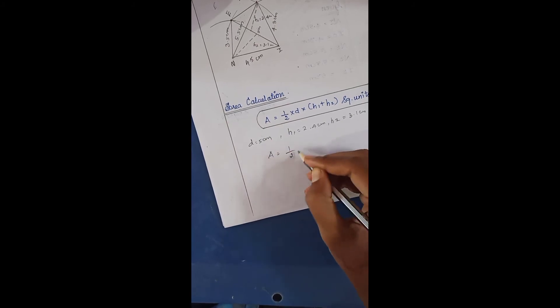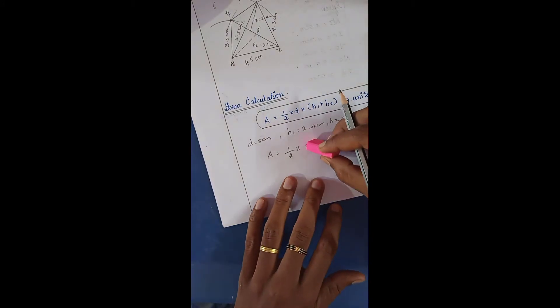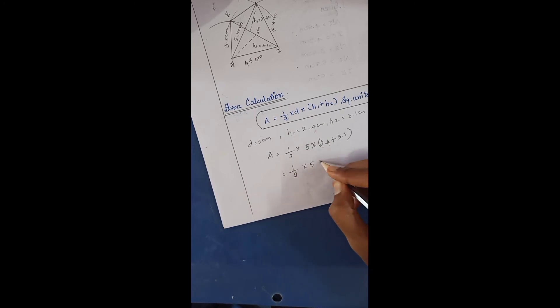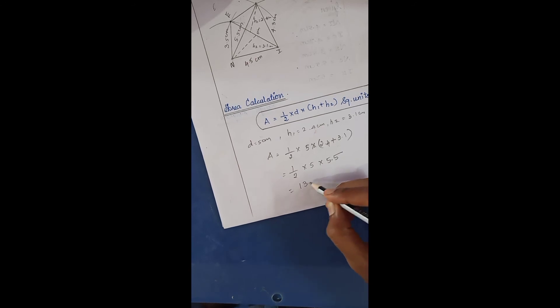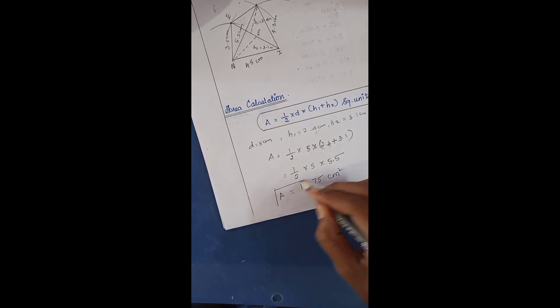Area = ½ × d × (h1 + h2). We should not write the units inside the calculation. So: Area = ½ × 5 × (2.4 + 3.1) = ½ × 5 × 5.5 = 13.75 cm². The square unit comes because we are calculating area. After completing the calculation, write cm² as the unit.